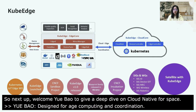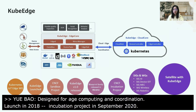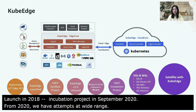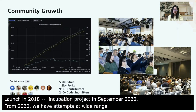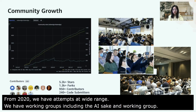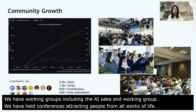From 2020, we have made in-depth attempts across a wide range of fields. We now have five SIGs and working groups, including the AI SIG, Device IoT SIG, MEC SIG, Robotics SIG, and the Wellness Working Group. Since launch, KubeEdge has had healthy growth — we have held lots of conferences and meetups, attracting people from all walks of life. We now have more than 900 contributors, including 260 code submitters, from more than 70 organizations.